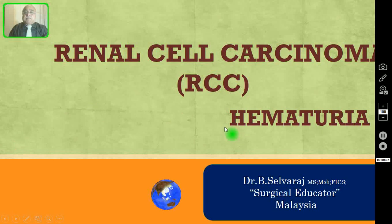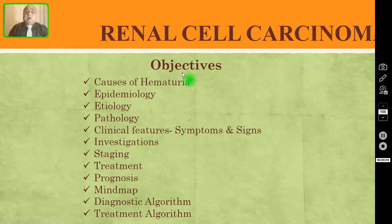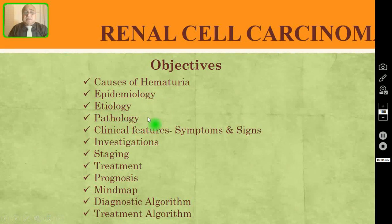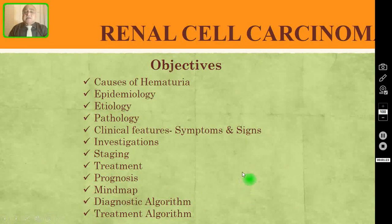Today in this episode, I am going to discuss one more cause for hematuria, that is renal cell carcinoma or hypernephroma. After watching this video, all of you should understand the causes for hematuria, the epidemiology, etiology, pathology, clinical features including symptoms and signs, investigation, staging, treatment and prognosis of renal cell carcinoma. I have also included a mind map, a diagnostic algorithm, and a treatment algorithm.